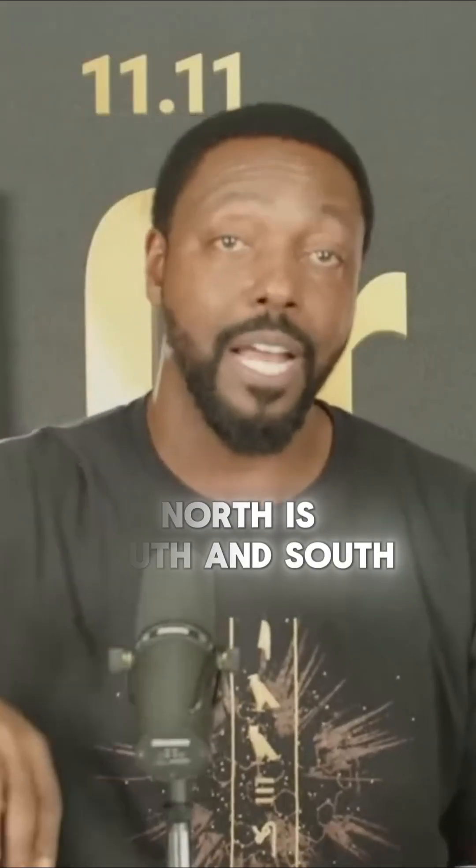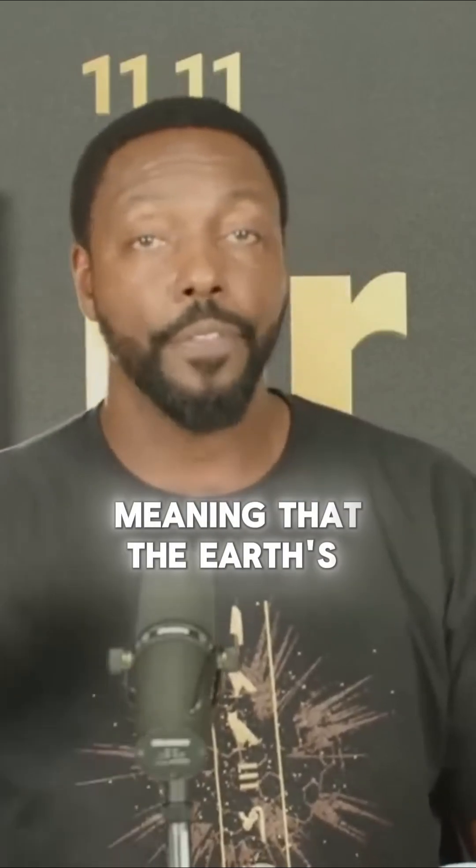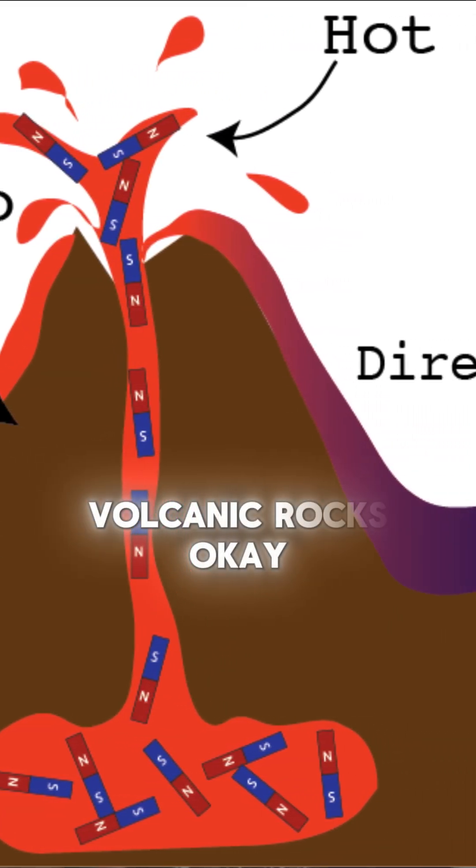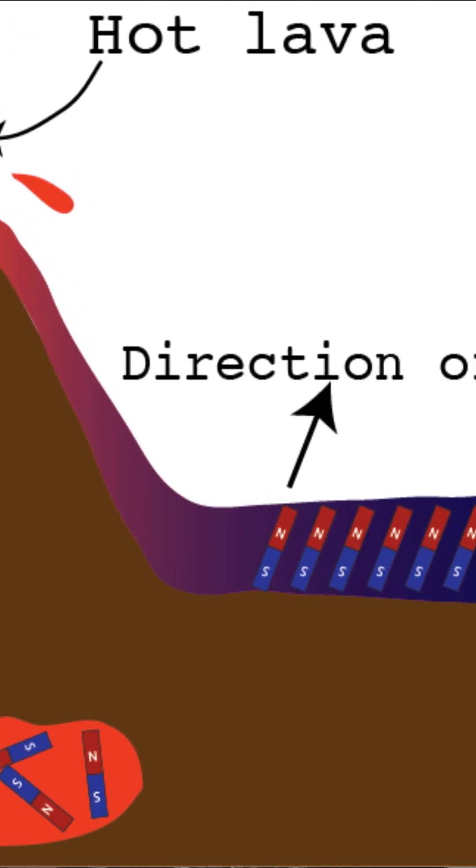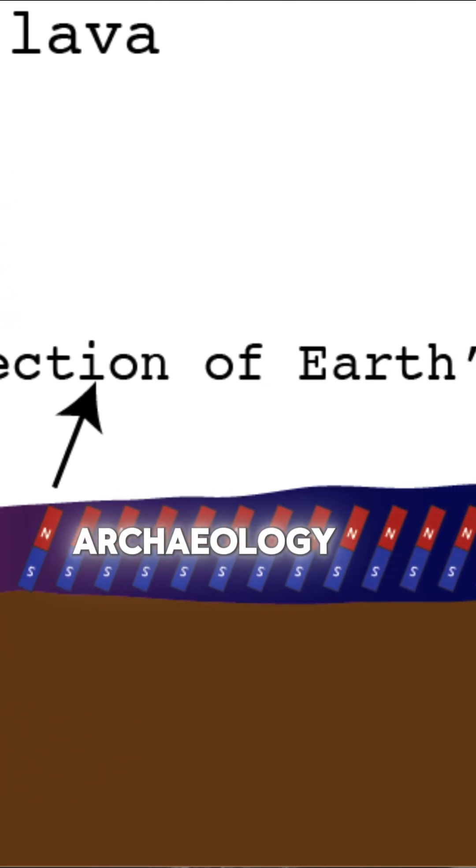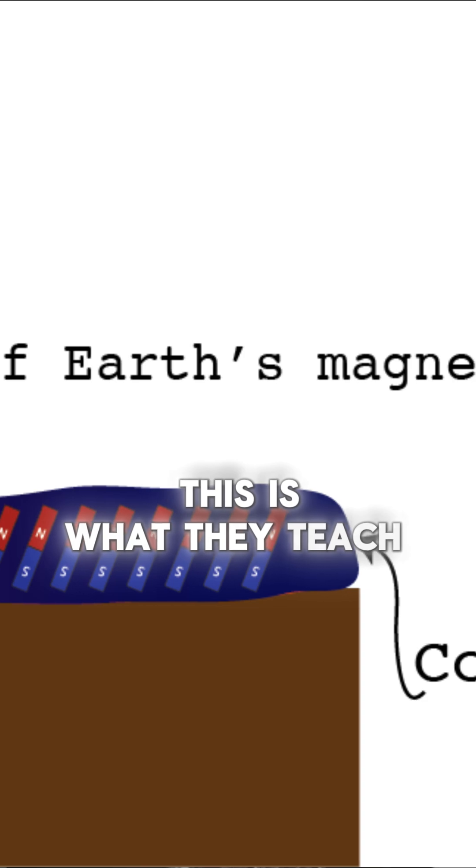In other words, north is south and south is north, meaning that the Earth's magnetic field is recorded in volcanic rocks. And we know this. This is basic archaeology 101. This is what they teach you. This is basic stuff.